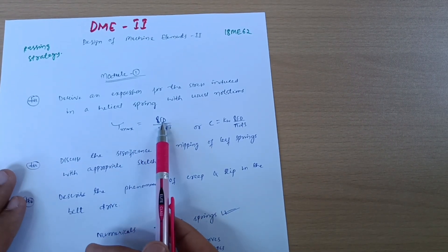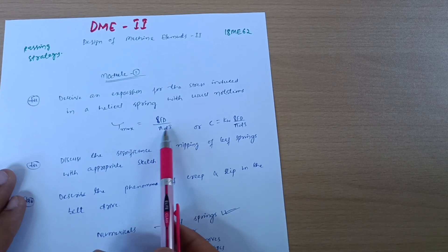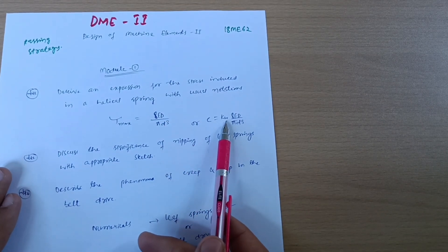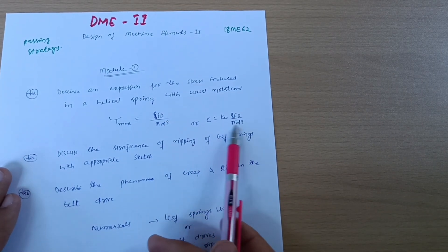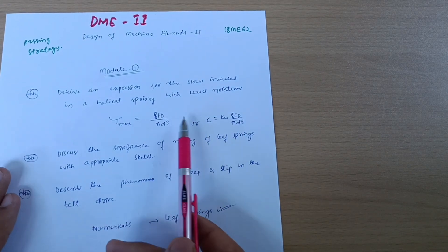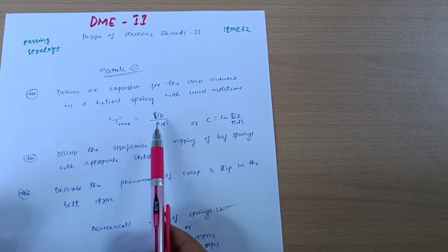Tau max equals 8FD divided by pi d cube, or C equals Kw 8FD divided by pi d cube. This is the super important question for DME. It will be fixed in the examination.